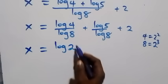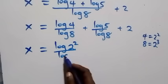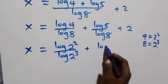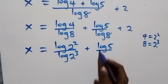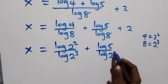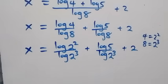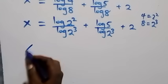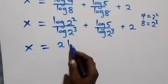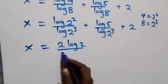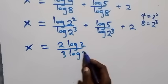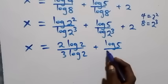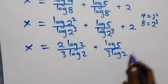So we have x equals log 2 squared over log 2 cubed, then plus log 5 over log 2 cubed, plus 2. Applying the power law of logarithms, this becomes x equals 2 log 2 over 3 log 2, then plus log 5 over 3 log 2, plus 2.